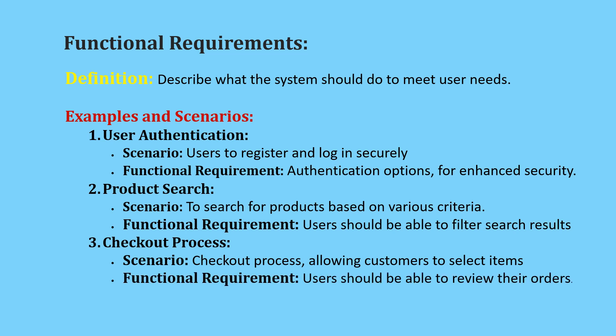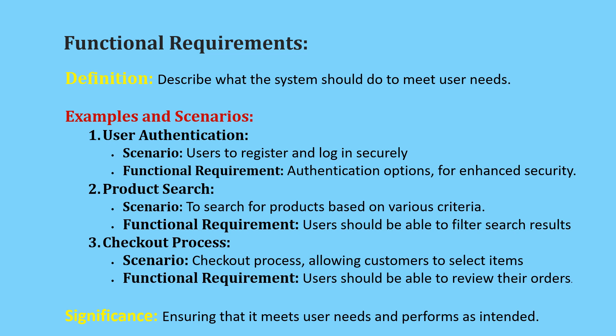Example three — checkout process. Scenario: an online food delivery service offers a streamlined checkout process allowing customers to select items, customize orders, and complete payment seamlessly. Functional requirement: the checkout process should be intuitive and user-friendly, guiding customers through each step of order placement. Users should be able to review their orders, apply discounts or coupons, and choose delivery options before making payment. Functional requirements define the behavior and capabilities of the software system, ensuring it meets user needs and performs as intended.